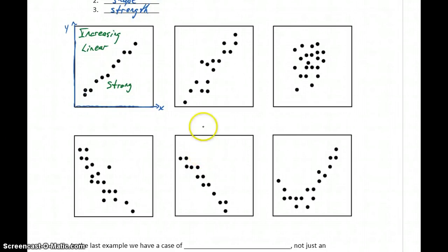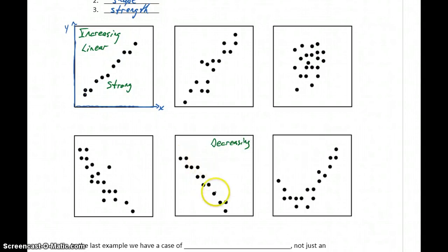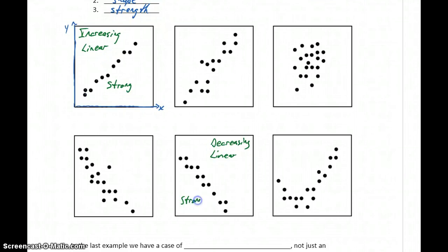If we jump down to the second row, we have an example of a decreasing trend. Our points are headed down as we read the graph from left to right. We still have a linear shape, and again, we have a relatively strong association, since the points follow pretty tightly to that straight line pattern.